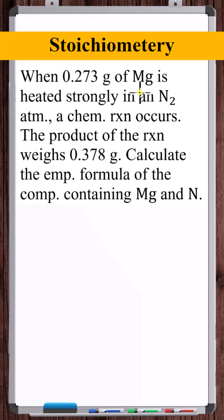When 0.273 grams of magnesium is heated strongly in an N2 nitrogen atmosphere, a chemical reaction occurs. The product of the reaction weighs 0.378 grams. Calculate the empirical formula of the compound containing magnesium and nitrogen.